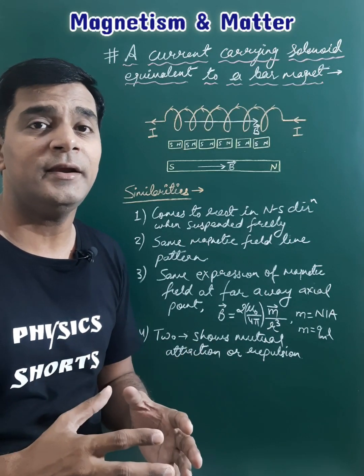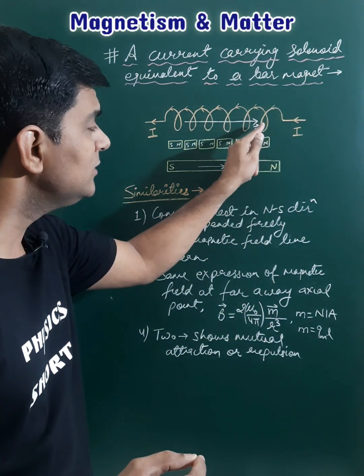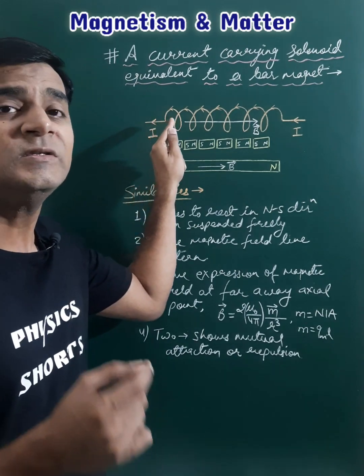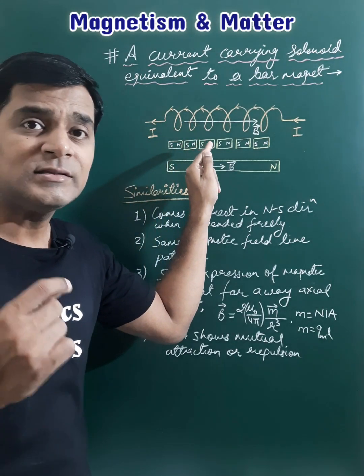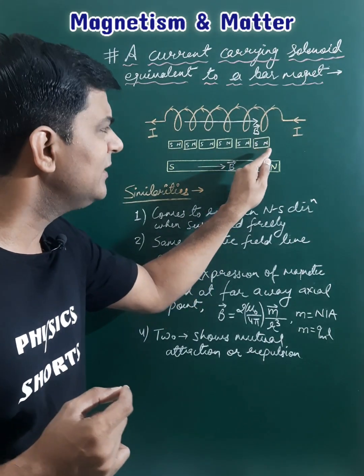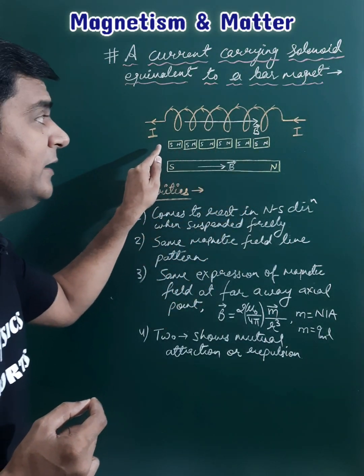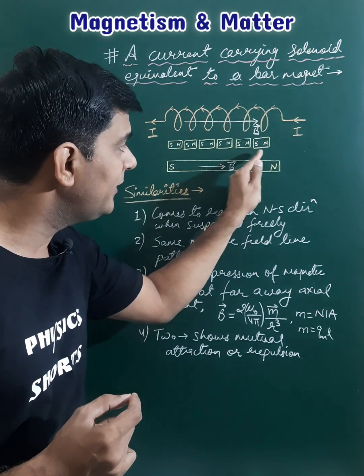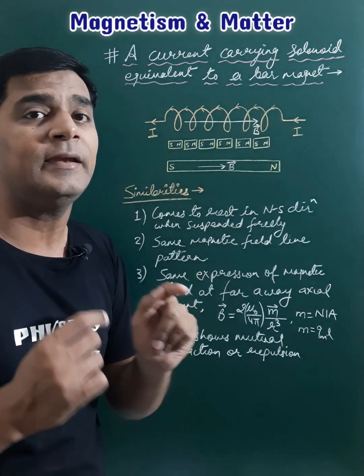A current carrying solenoid can be regarded as the combination of a large number of current carrying circular turns placed side by side. Since each circular turn carrying current is equivalent to a tiny magnet, we can say all these magnets are placed side by side, and the number of magnets equals the number of current carrying circular turns.